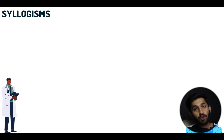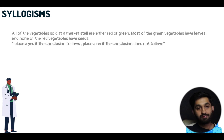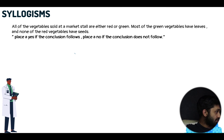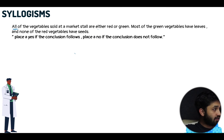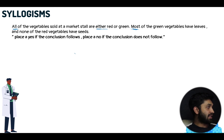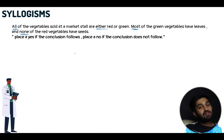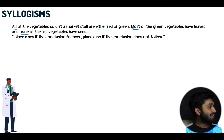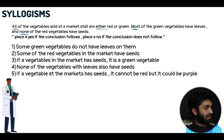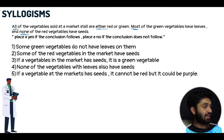Let's take a look at an example that you would find in the exam. All of the vegetables sold at the market stall are either red or green. Most of the green vegetables have leaves, and none of the red vegetables have seeds. Then you get a question following on from those premises saying: place yes if the conclusion follows, place no if the conclusion does not follow. And then you get a list of conclusions, and for each one you have to say whether yes, they follow, or no, they don't follow.